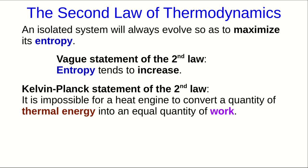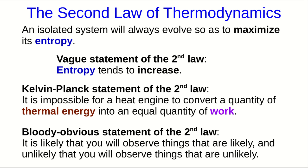But the statement of the second law that I like is the one I like to call the bloody obvious statement of the second law, which is just that it's very likely that you will observe things that are likely and unlikely that you will observe things that are unlikely. That's really all the second law is saying. High entropy states are the ones you will observe. And systems that start off in unlikely states tend to evolve towards likely ones.